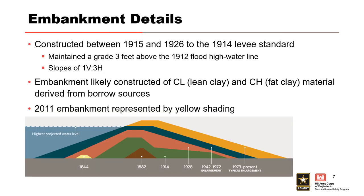Details regarding the construction history of the embankment are limited. Based on a review of the Mississippi River Commission hydrographic surveys, the levee was constructed between 1915 and 1926 to the 1914 levee standard, which maintained a grade three feet above the 1912 Mississippi River high flood water line and had slopes of one vertical to three horizontal on both the riverside and landside. The embankment is likely constructed of lean clay and fat clay material derived from nearby borrow sources, and since construction there have been several enlargements to the levee section. The embankment as of 2011 was largely represented by the 1973 enlargement, with an average height of approximately 40 feet, a crown width of 10 feet, a riverside slope of one vertical to four horizontal, and a landside slope of one vertical to five and a half horizontal. It's noted in USACE documents that the reach of levee containing Buck Chute wasn't analyzed in any way until 1973.